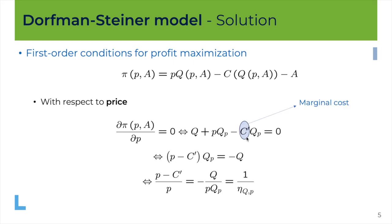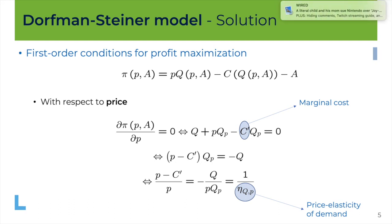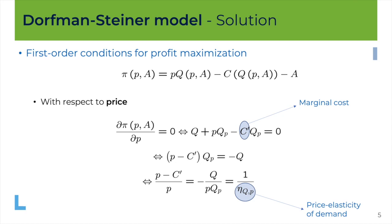C' is our notation for the marginal cost. The rest is just rearranging this equation to find the monopoly pricing formula we derived previously. On the left-hand side we have the ratio of price minus marginal cost divided by price — the Lerner index, or the markup — which we know is inversely related to the price elasticity of demand. So the monopolist chooses its price according to the monopoly pricing rule, which equates the markup or Lerner index to the inverse of the price elasticity of demand.